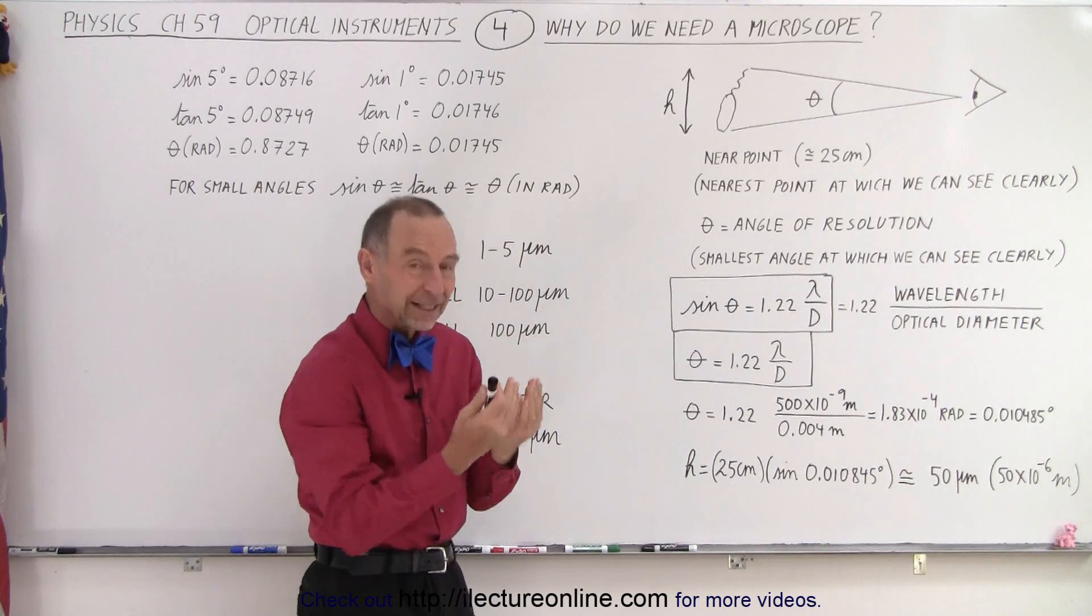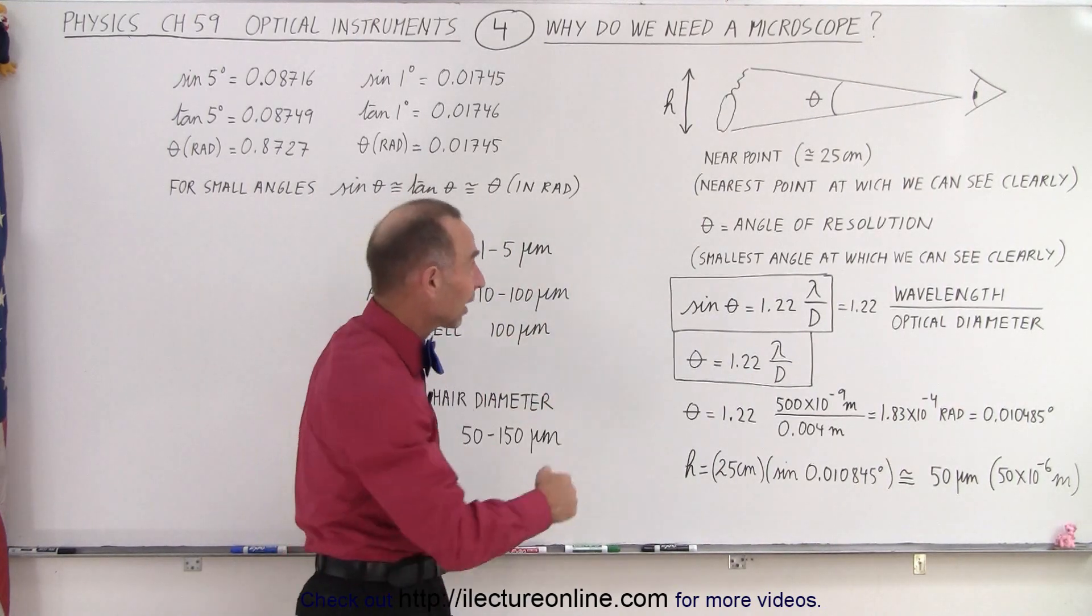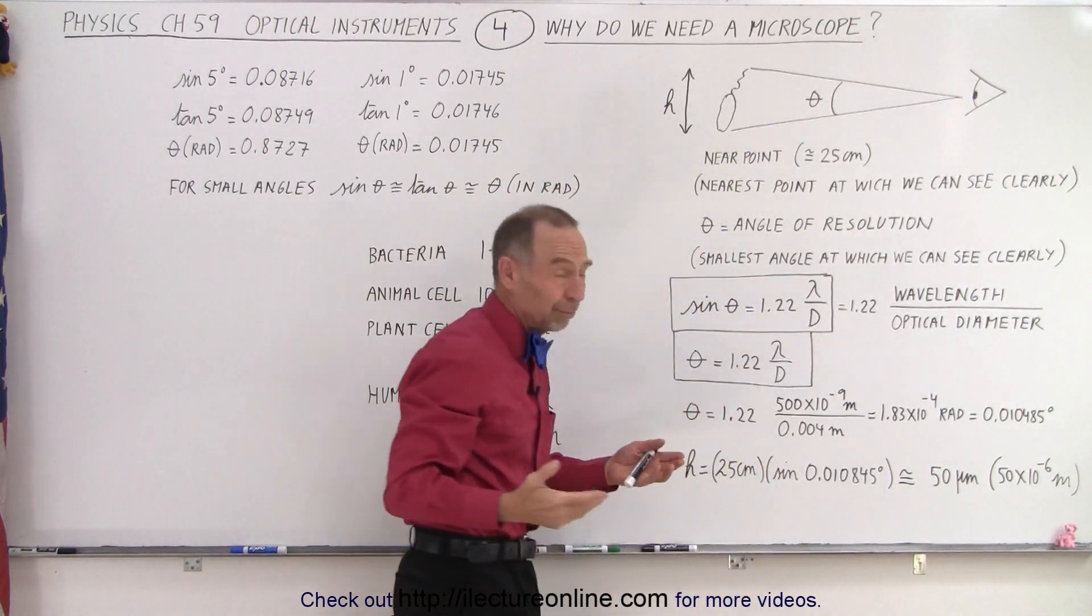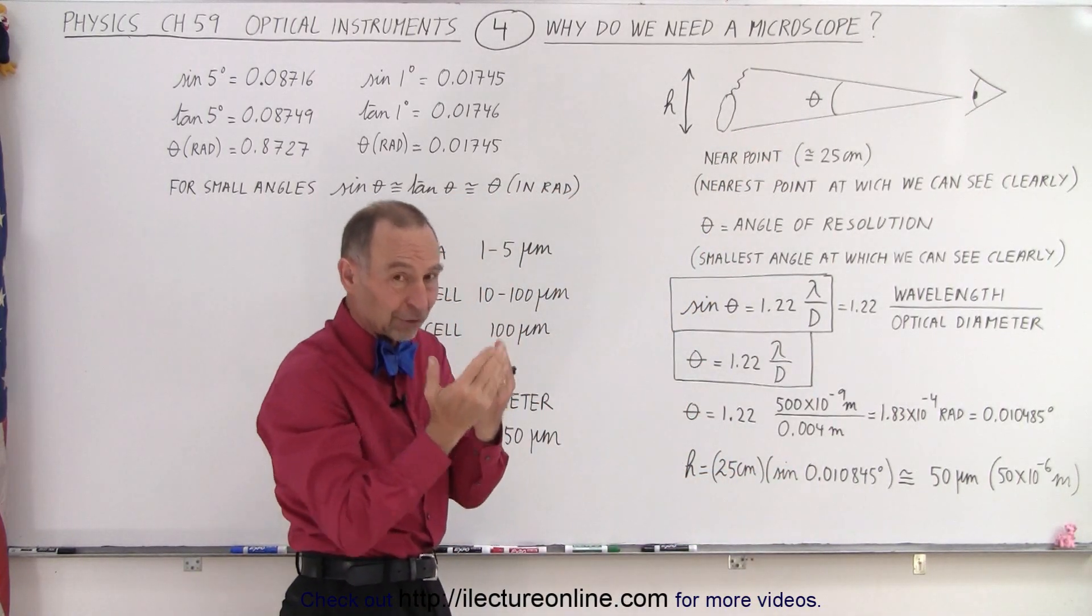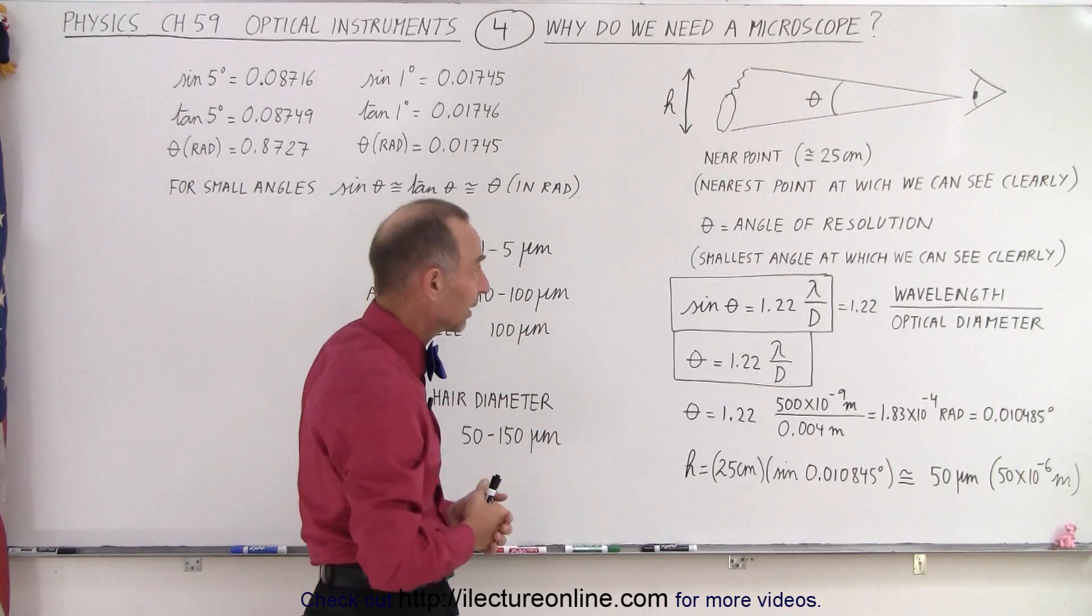So that's why I use reading glasses to be able to see clearly nearby. But let's assume that we have a young person here that can clearly see things at 25 centimeters. Matter of fact, children can typically see things even closer clearly than that, but 25 centimeters is the norm that we use for these kind of calculations.